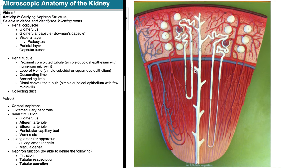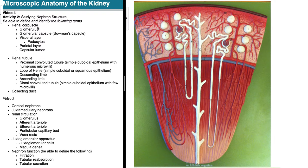The renal corpuscle is a category you might sometimes call the glomerulus, since the glomerulus is the more prominent structure. However, they are technically not the same thing. The renal corpuscle is the more general term, and the glomerulus is just one component within it. For many students studying this for the first time, renal corpuscle and glomerulus seem interchangeable, but they're not.